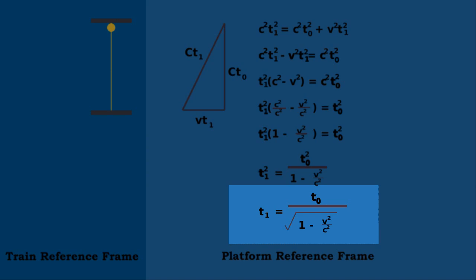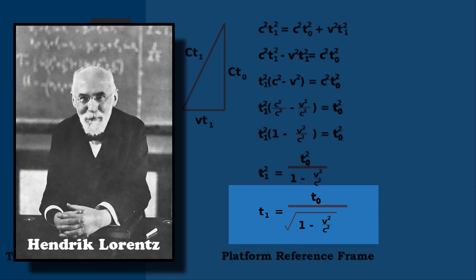But what this equation tells us is that, observed from the platform frame of reference, time on the train appears to be moving more slowly. And how much more slowly is dependent on V, i.e. the speed of the train as a fraction of the speed of light. Now, if V is very small, as it is for us day to day, then V squared over C squared is nearly zero, and T1 equals T0, i.e. there is no noticeable time dilation. This formula is the Lorentz factor, named after a clever Dutch bloke, and is used throughout relativistic calculations.